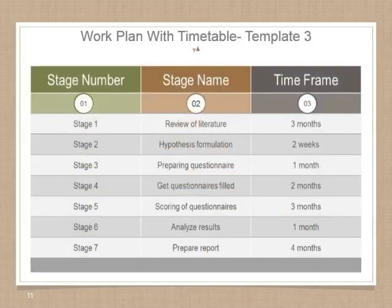Another example of a work plan with timetable is based on how many months you will spend on research across seven stages: review of literature, hypothesis formulation, preparation of questionnaires, getting questionnaires filled, scoring questionnaires, analyzing results, and preparing the report.